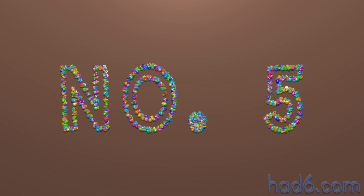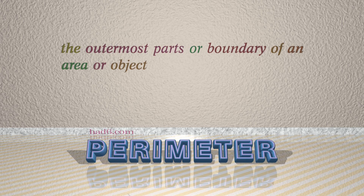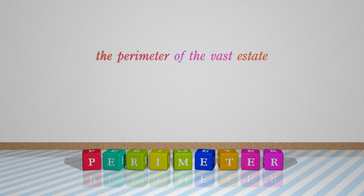Number 5: Perimeter, which means the outermost parts or boundary of an area or object. For example: The perimeter of the vast estate.